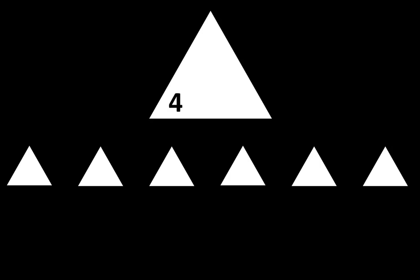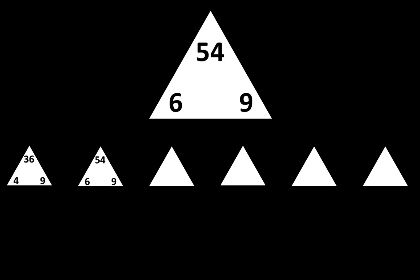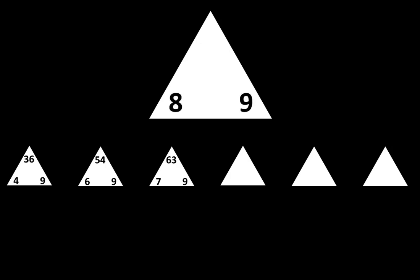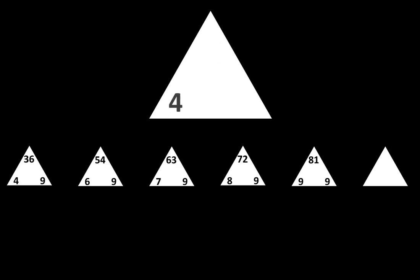Let's move to the next row. The next one is 4 times 9 is equal to 36. The next one is 6 times 9 is equal to 54. The next one is 7 times 9 is equal to 63. The next one is 8 times 9 is equal to 72. The next one is 9 times 9 is equal to 81. The next one is 4 times 4 is equal to 16.